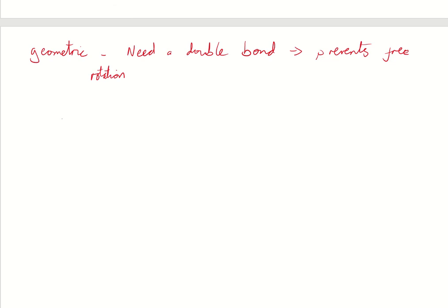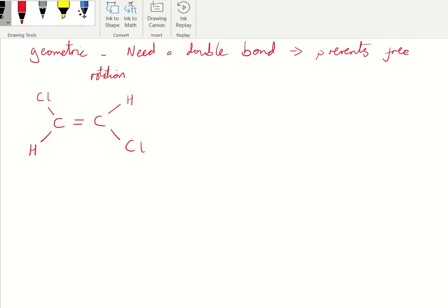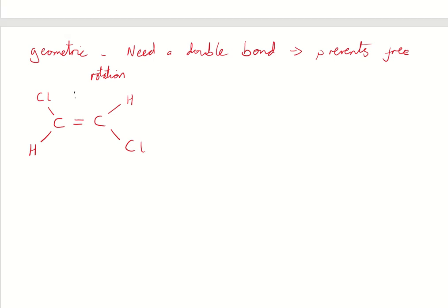So to give an example for how to work it out and how to spot them. Right, so first off, what we would do, if I just change my pen color, put a dashed line down the middle there through the double bond.